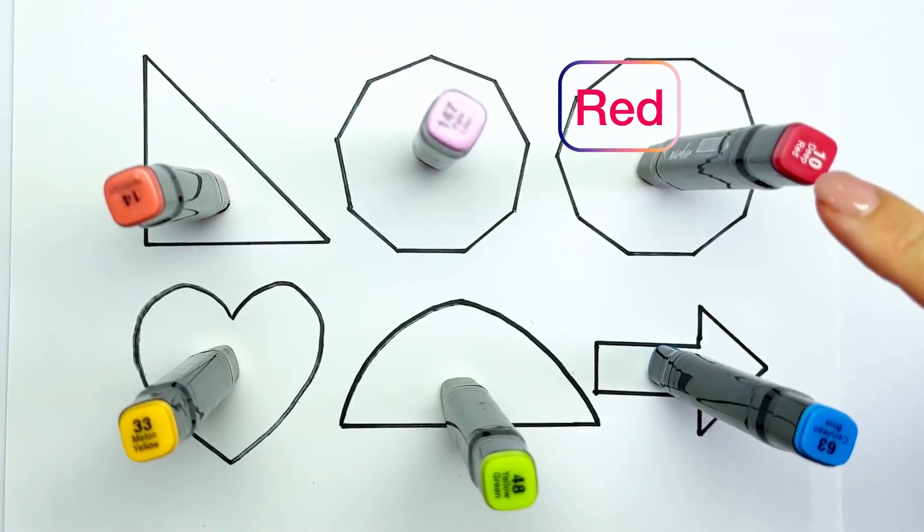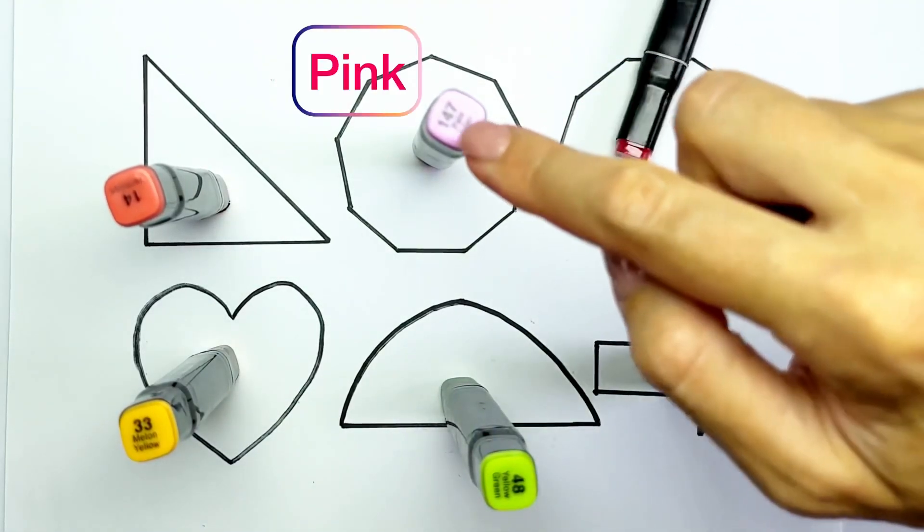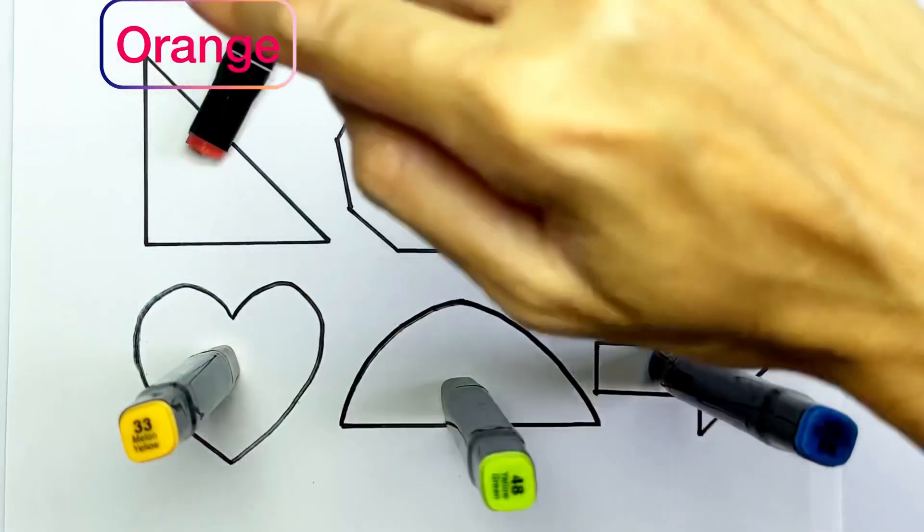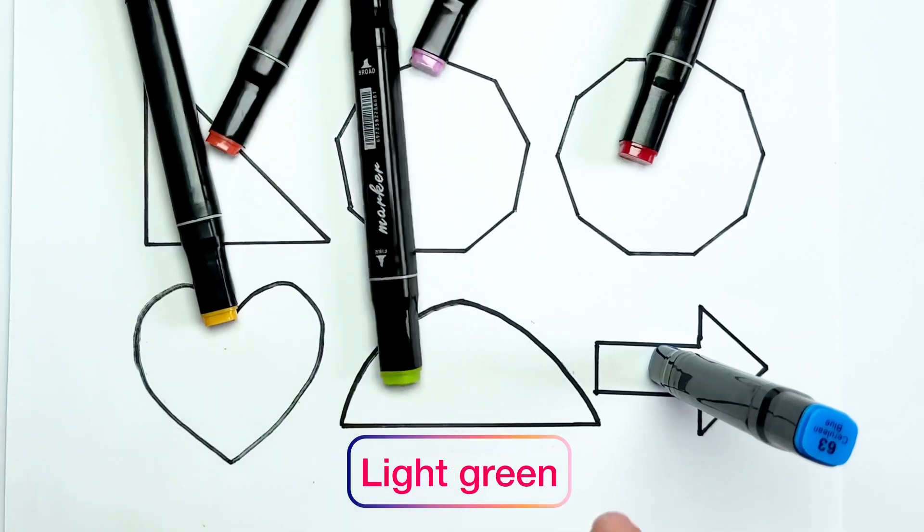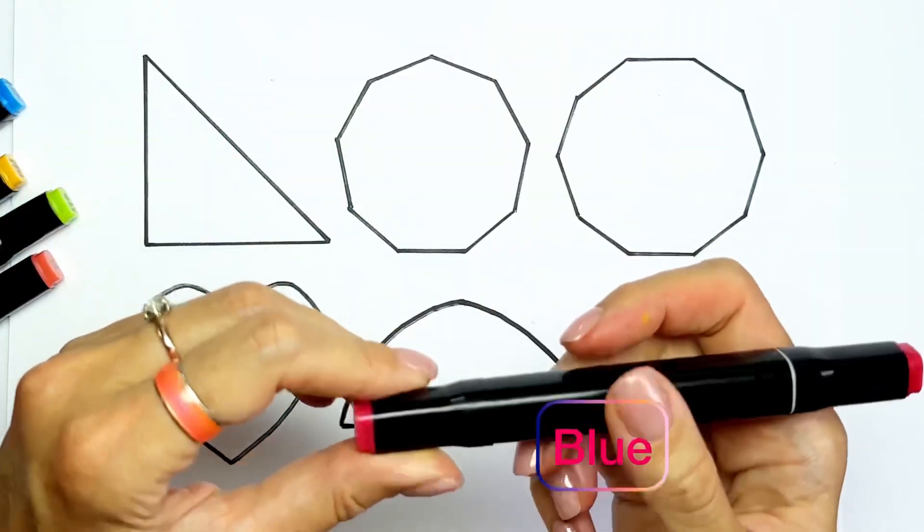So we have red color, we have pink color, we have orange color, we have yellow color, we have light green color, and we have blue color. Let's color them.